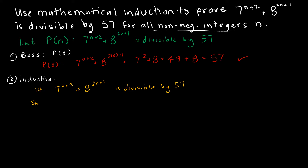And I want to show that by increasing k by 1, so this would be 7 to the k plus 3, plus 8 to the 2 times k plus 1 plus 1, which would be 2k plus 3 because I distribute that 2. So I'm going to write it as 8 to the 2k plus 3. And I want to show that that is divisible by 57.